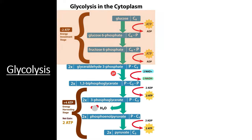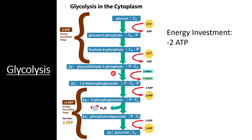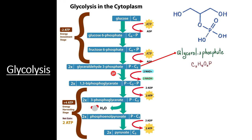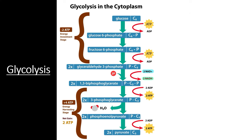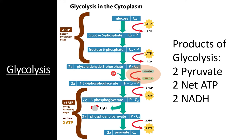Glycolysis starts with an energy investment phase. During this phase, two ATP molecules are used to break glucose down from one 6-carbon molecule into two 3-carbon molecules of glyceraldehyde-3-phosphate. You may recognize this G3P molecule since it is also produced as a precursor to glucose via the Calvin cycle as part of photosynthesis. After this energy investment phase, the payoff or energy harvesting phase takes place. During this phase, G3P is converted into pyruvate in a process that produces 4 ATP. The start of this payoff stage also fills two NAD+ electron carriers with electrons, creating two NADH molecules. Therefore, the total process of glycolysis produces two pyruvate molecules, two net ATP, and two filled electron carriers.